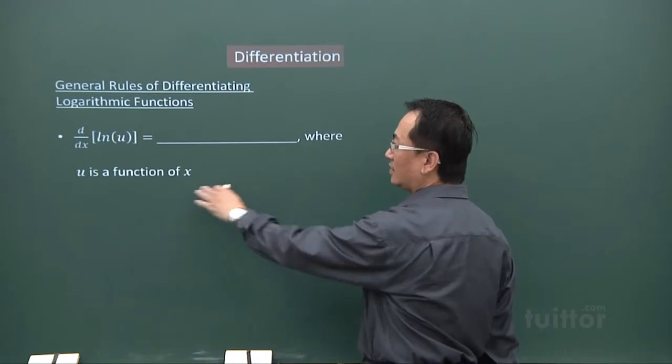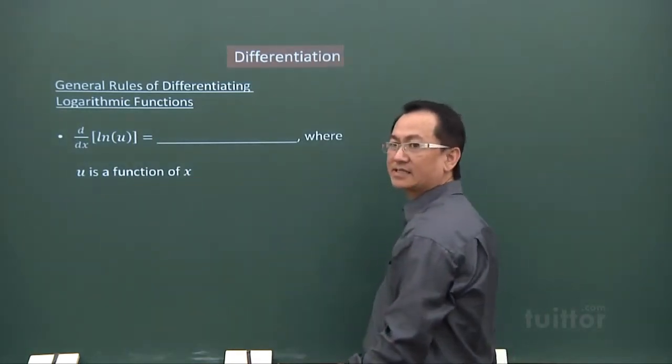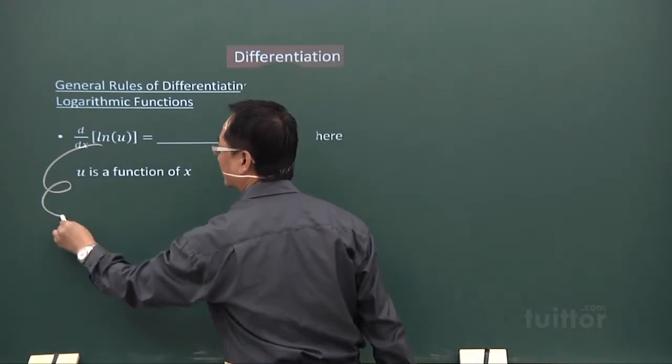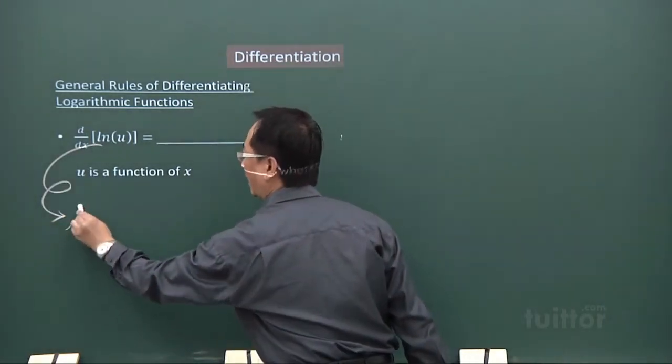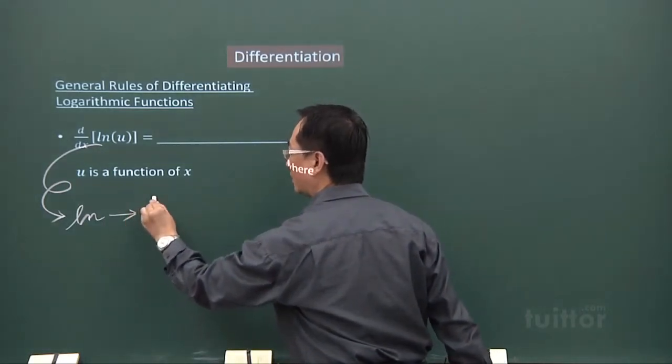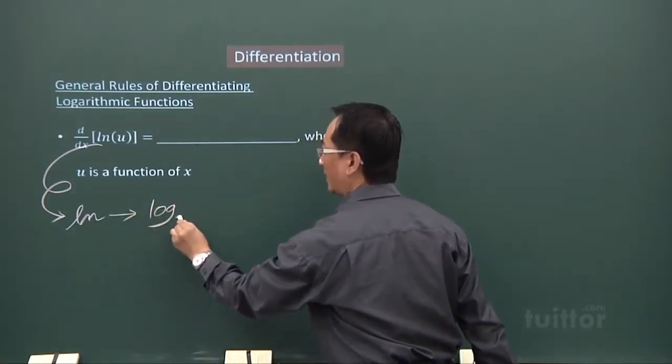Here, u is a function of x. But let's digress a little bit. When I'm talking about ln, basically I'm talking about log with a base e.